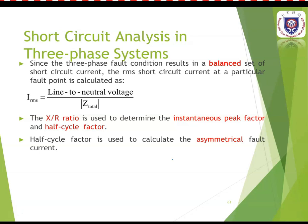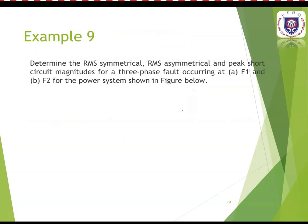Since a three-phase fault results in a balanced set of short circuit currents, the RMS short circuit current at a fault point is calculated as IRMS = V-phase divided by the magnitude of the total impedance. The X/R ratio is used to determine the instantaneous peak factor and half-cycle factor. The half-cycle factor is used to calculate the asymmetrical fault current. Example 9 requires determining RMS symmetrical, RMS asymmetrical, and peak short circuit magnitudes for faults at F1 and F2.